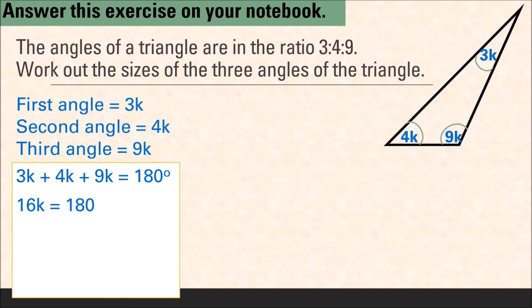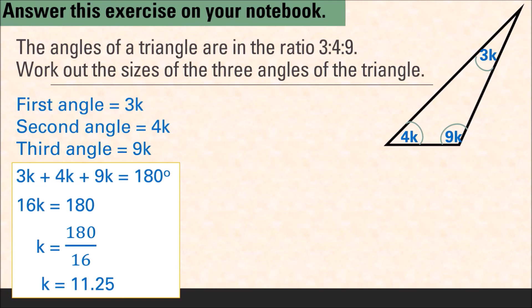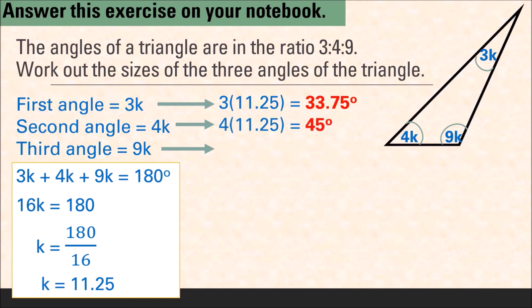Combining like terms: 3k plus 4k plus 9k is 16k, so 16k equals 180. Solving for k, we divide 180 by 16, giving k equals 11.25. So the original angles were obtained by multiplying back: the first angle is 3 times 11.25, which is 33.75 degrees; the second angle is 4 times 11.25, which is 45 degrees; and the third angle is 9 times 11.25, which is 101.25 degrees. To check, add all three angles — you should get 180 degrees.